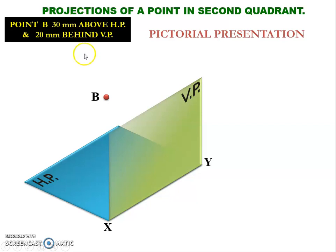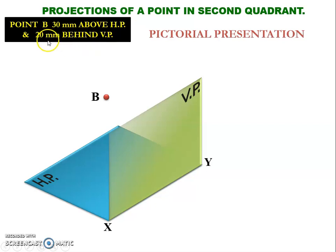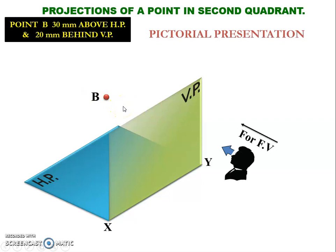Now let us consider a point which is located in the second quadrant and find its projection. It is given that the point B is located 30 mm above the horizontal plane and 20 mm behind the vertical plane.